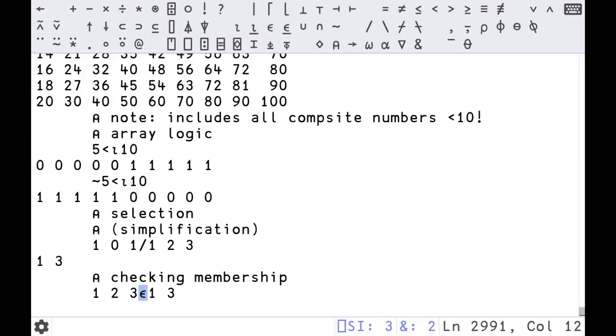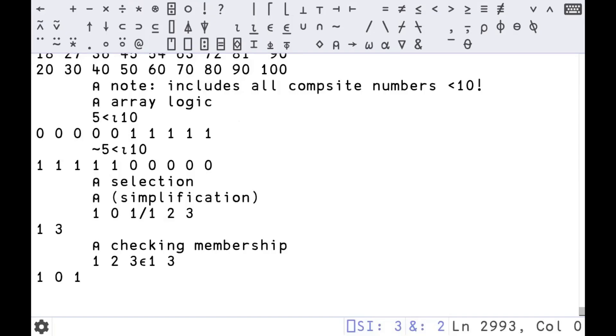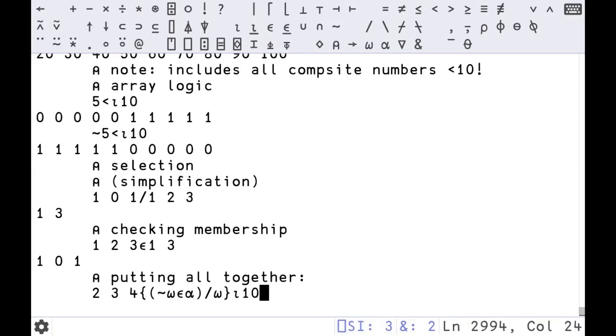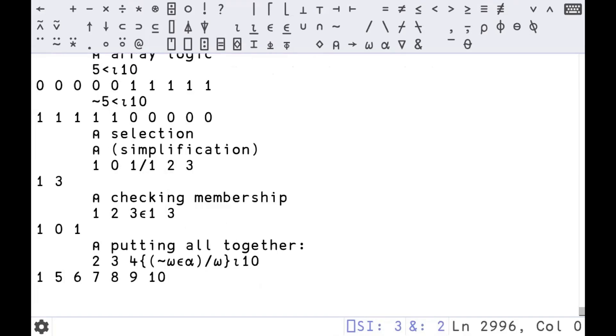Here's another function. Epsilon when used in the dyadic form will go through the array on its left and check to see if it's in the array on the right. 101 because one and three were in there and two was not. Let's start to put all of that huge pile of information together. We have a dyadic function. We have the value one through 10 on the right, 234 on the left. You can see we are selecting from one through 10 the elements that are not, because of the tilde, in, because of the epsilon alpha, the value on the left. So we're selecting all the elements from one through 10 that are not in 234, and we get it.